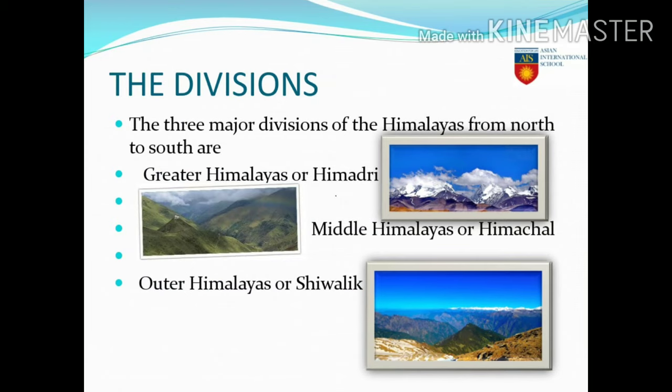Now as you see in the slide, we will read about the divisions of the Himalayas. The three major divisions of the Himalayas from north to south are the Greater Himalayas or Himadri, the Middle Himalayas or the Himachal, and the Outer Himalayas or the Shivalik.